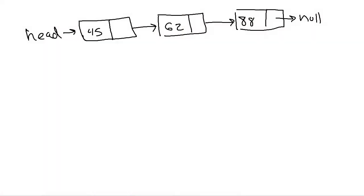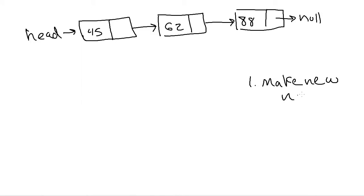Let's start by talking about adding to the end of a linked list. We kind of punted on this last time — we talked about adding to a linked list but only did the beginning because that's easier. Now we're going to come back and solve the harder problem. Some things will still be the same, like making a new node and putting the data in.